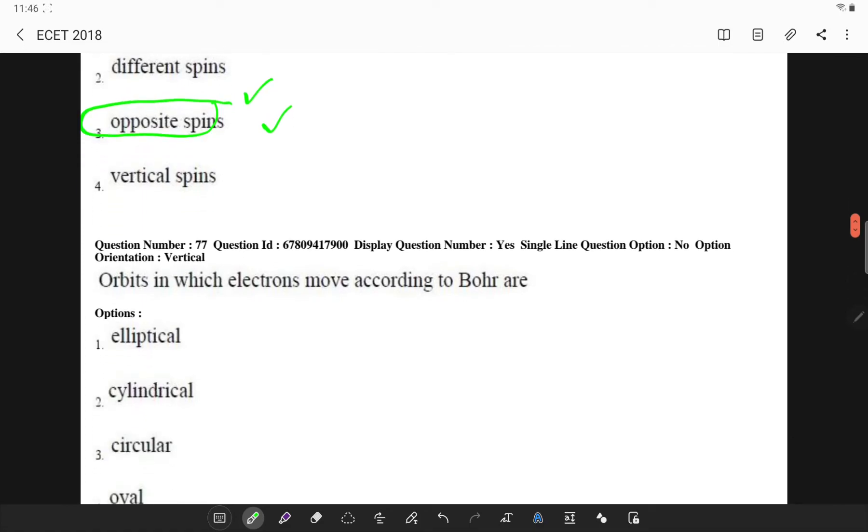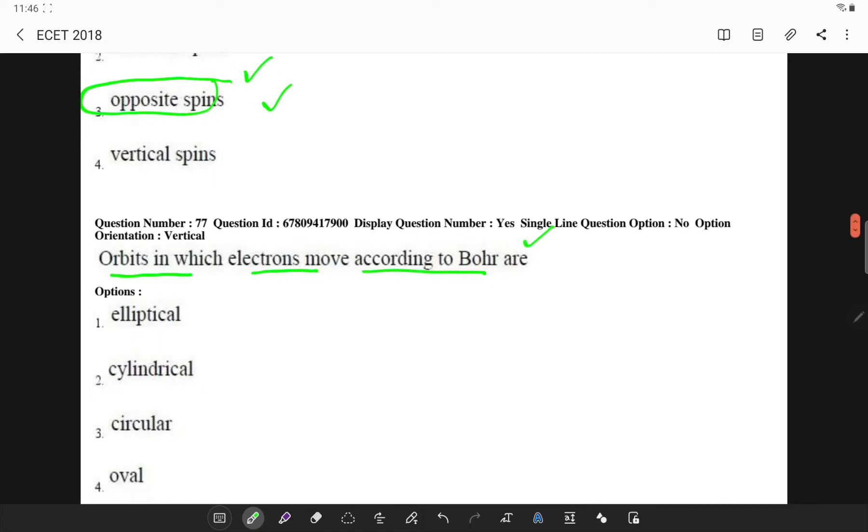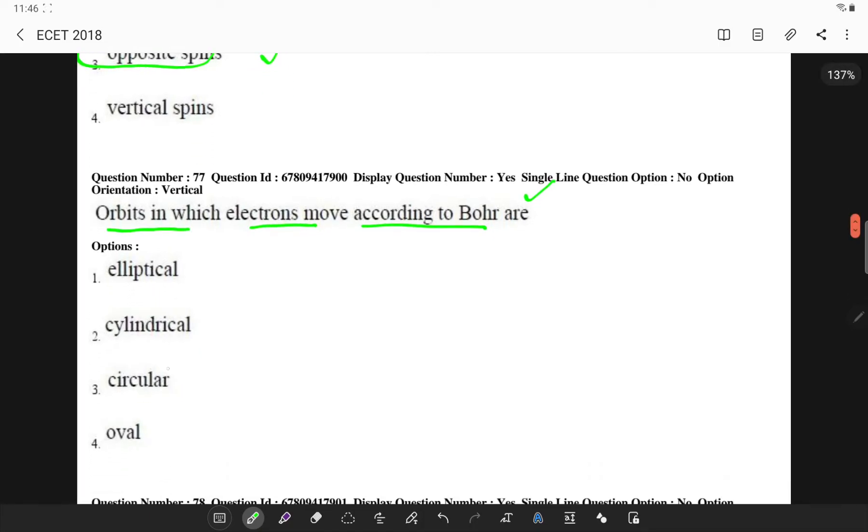Let's go to the next question. Orbits in which electrons move according to the Bohr are?